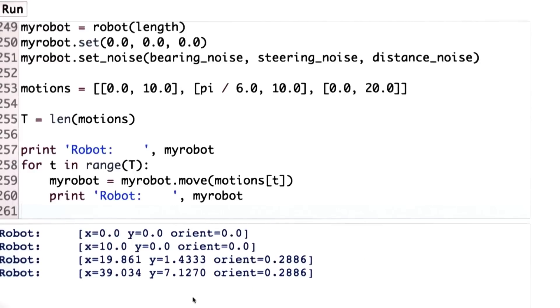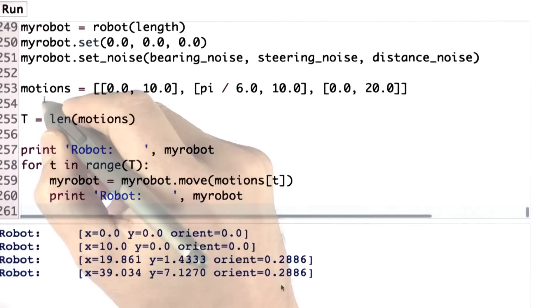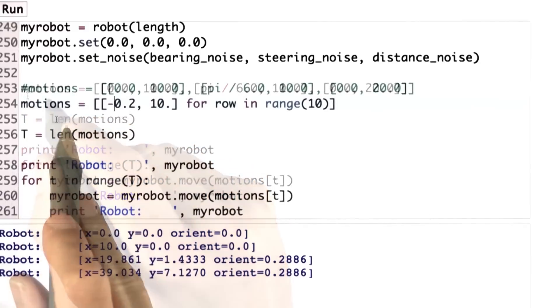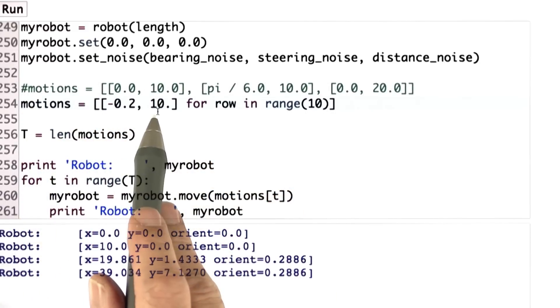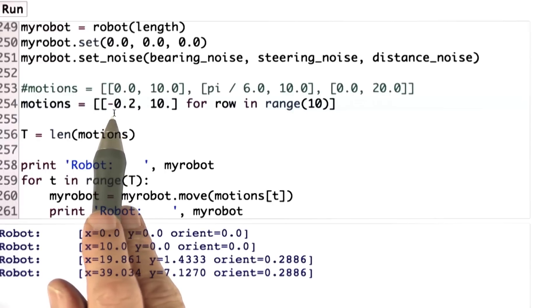So your code should output exactly the same values as us over here. And just to give you a second test, so this is a sequence of 10 motions, where the robot always moves 10 forward and always turns right by an angle of 0.2 in radians.